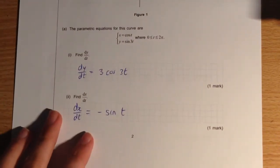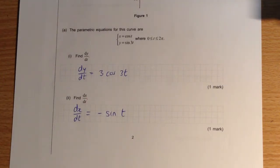So, the question starts by giving us two parametric equations for the curve. So given the parametric equation of x and parametric equation of y, and we're also given a domain there as well. 0 less than or equal to t less than or equal to 2π.